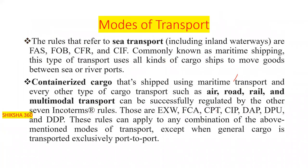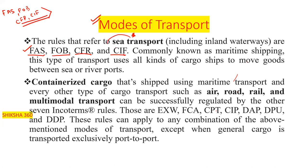One more point to discuss — modes of transport. Some Incoterms are specifically used for sea transport. The rules that refer to sea transport including inland waterways are: FAS — Free Alongside Ship, FOB — Free On Board, CFR — Cost and Freight, and CIF — Cost Insurance and Freight. These four are specifically used for sea transport, commonly known as maritime shipping, using all kinds of cargo ships to move goods between sea or river ports.